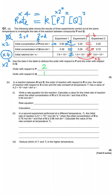The question then moves to a different set of chemicals, R and S. We're told the order with respect to R is 1 (first order) and with respect to S is 2. We've been asked to write the rate equation: rate = k × [R]¹ × [S]². Rate equations are always constructed that way — rate equals k, multiplied by each concentration term raised to its order.